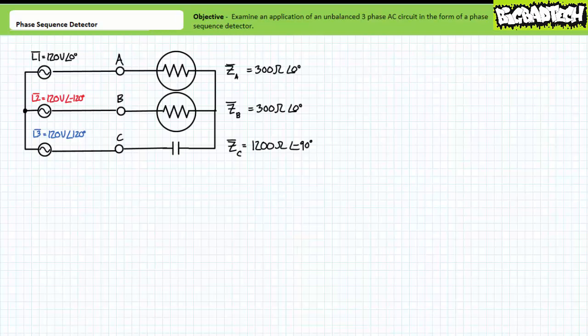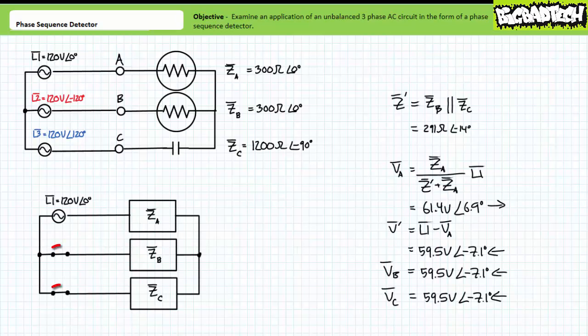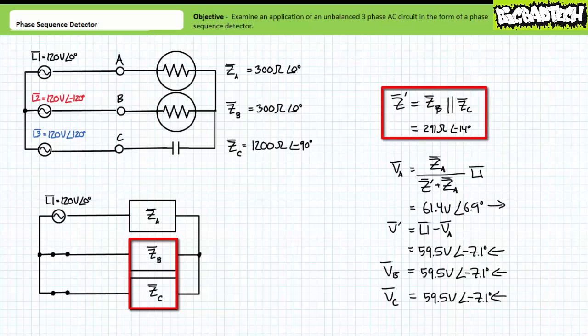Let's apply the superposition theorem from the top down — first L1, then L2, then L3, then a final summation accounting for magnitude, phase shift, polarity, and direction. To analyze the system from the perspective of source L1 only, we remove sources L2 and L3 by substituting a short circuit. This modification reveals that ZB, one of the light bulbs, is in parallel with ZC, the capacitor — a simplification called Z single prime. The parallel combination of ZB and ZC presents a combined impedance of 291 ohms at an angle of negative 14 degrees. ZA and Z single prime appear to be perfectly in series with one another, a perfect setup for the AC voltage divider rule.